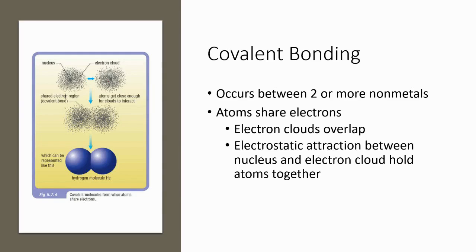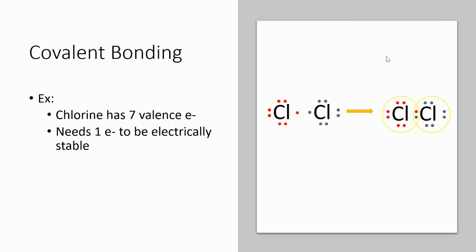Covalent bonding occurs between two or more non-metals. Everyone has really high electronegativity, so they're very able to pull those electrons in, and they end up having to share the electrons. The electron clouds end up overlapping, and the electrons are attracted to both nuclei — that electrostatic attraction is what holds them together. Both atoms feel like they have eight electrons. On its own, a chlorine atom has only seven valence electrons, but if it shares an electron from another chlorine atom, it feels like it has its original seven plus an extra one to make eight.